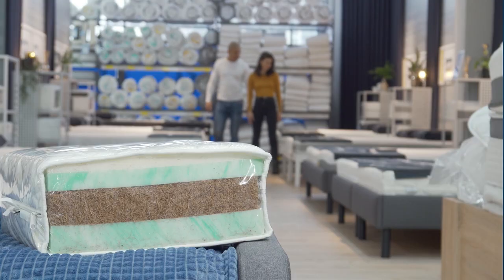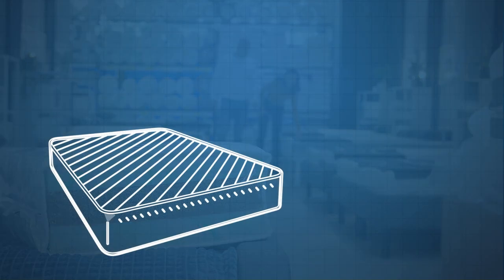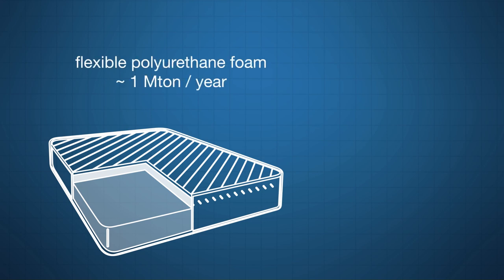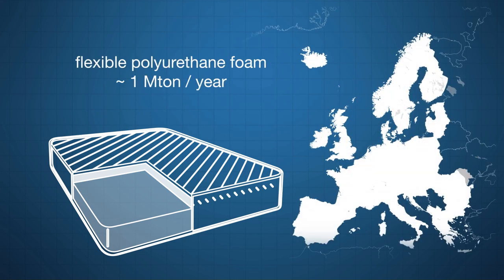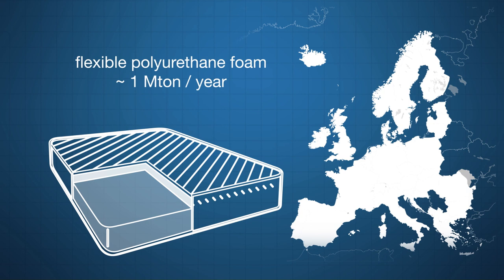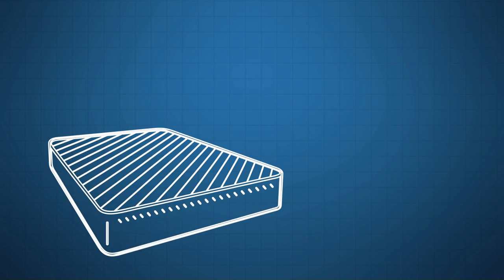The majority of mattresses contain flexible polyurethane foam, with an annual foam production of around 1 megaton in the European Economic Zone and the United Kingdom.